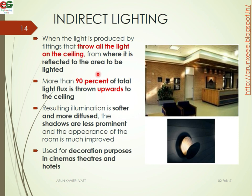In indirect lighting, the fittings throw all the light upwards to the ceiling, from where it is reflected to the area to be illuminated. More than 90% of the total light is thrown upwards to the ceiling, and the remaining 10% contributes to a softer, more diffused illumination. Shadows are less prominent.